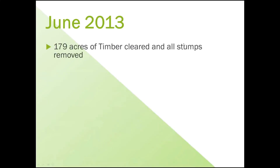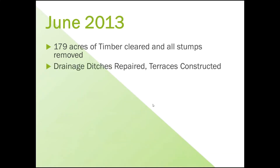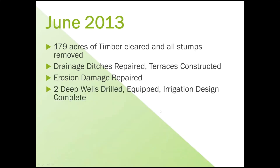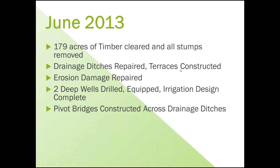We made that purchase, and in June of 2013, we began the project. We sold the timber off for enough cash — got that cash the week after closing — and started clearing off the trees, stumps, roots, and weeds. We got all of that removed, and the idea was to convert the timbered area to farmland as well. We built and repaired drainage ditches, and because there's a lot of elevation change on this farm, we had to construct terraces to slow erosion and repaired existing erosion. We drilled two deep wells on the property, equipped them, and did a complete irrigation design to maximize the amount of land we could actually irrigate.